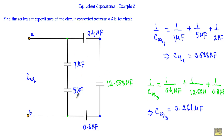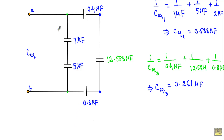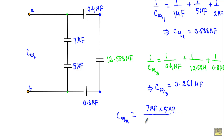For the 7 µF and 5 µF connected in series, I denote their equivalent as C_equivalent4. Since there are only two capacitors, C_equivalent4 = (7 µF × 5 µF) / (7 µF + 5 µF) = 35/12 = 2.92 µF.